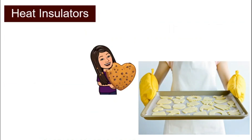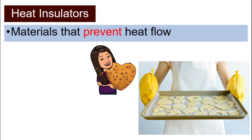Next, we'll look at heat insulators. Just now we looked at heat conductors — materials that allow heat to flow. How about heat insulators? They are just the opposite. Heat insulators are materials that prevent heat from flowing.